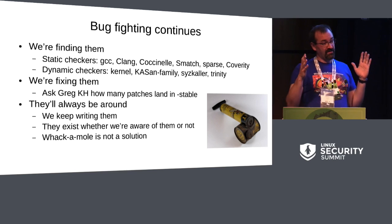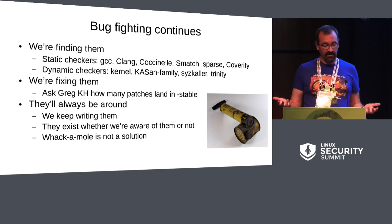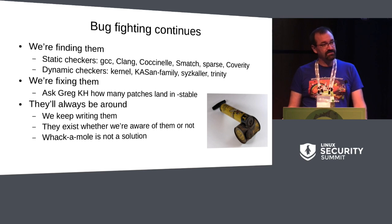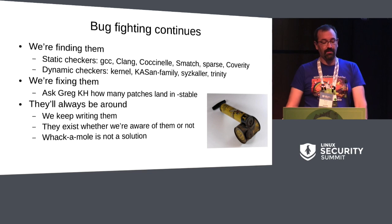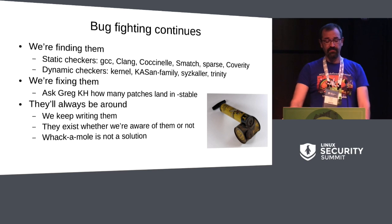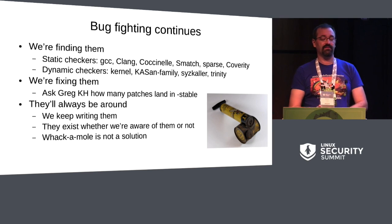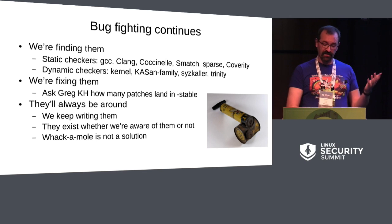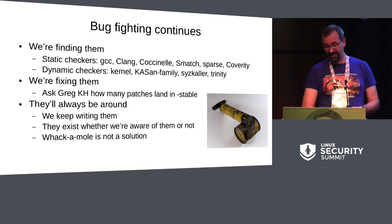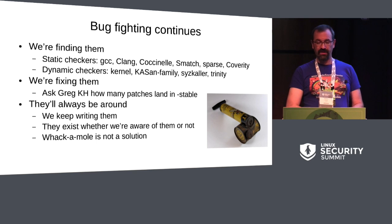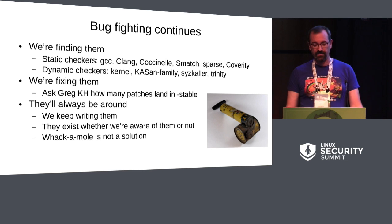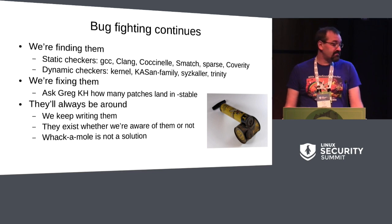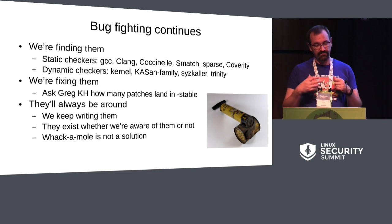The good news is that our bug fighting continues. We're finding bugs. We've got a lot of static checkers and dynamic checkers. We keep fixing them. Looking at 4.14.78, an LTS release, there are 7,529 commits — about 96 bug fixes per stable release. But we keep making bugs, and they exist whether or not we know about them. So whack-a-mole, while important, is not a particularly complete solution.